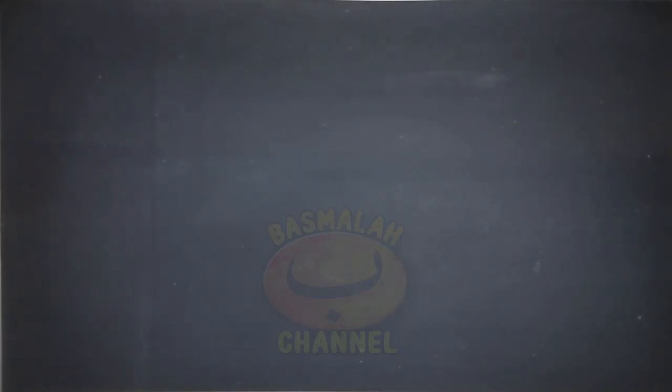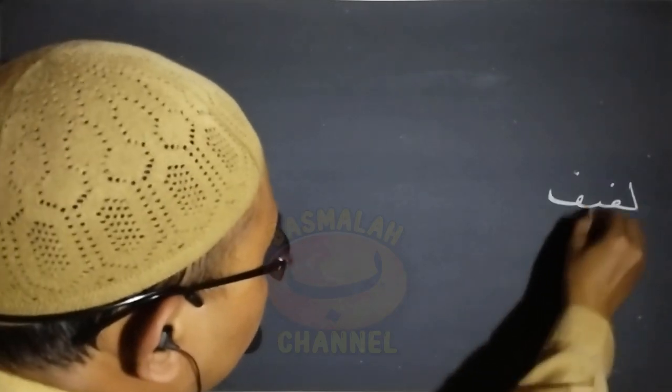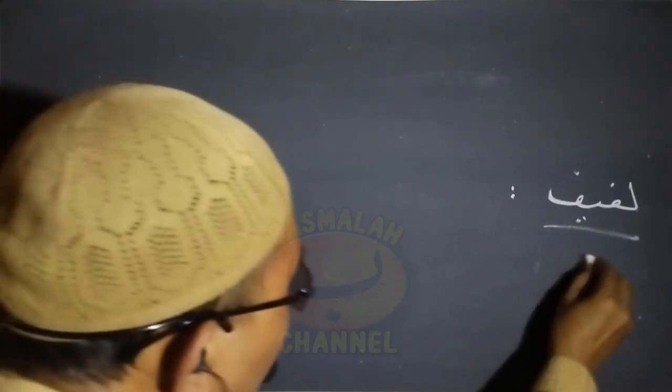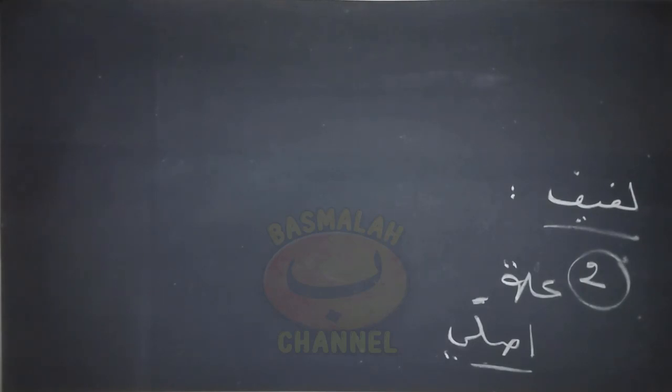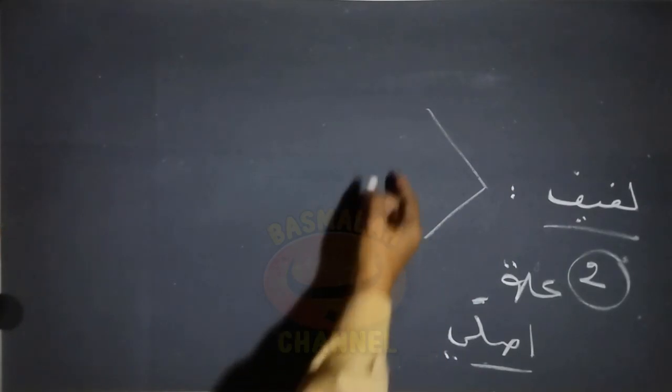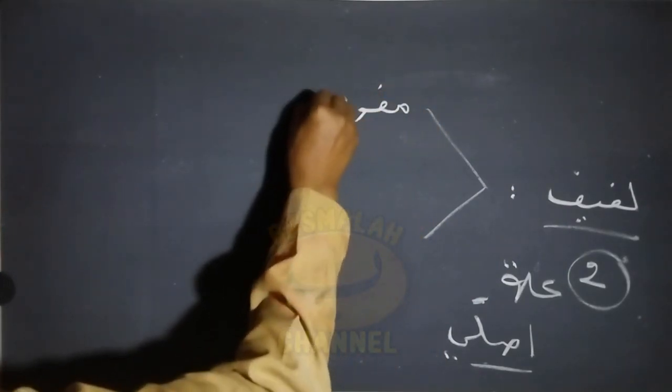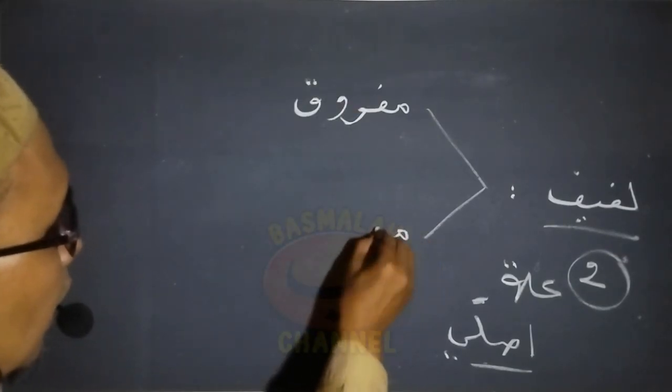Pembahasan kita adalah masih tentang keadaan dari fi'il mu'tal. Fi'il mu'tal yang kita bahas dalam pembahasan kali ini adalah tentang fi'il mu'tal yang masuk di dalam kategori bina' lafif. Bina' lafif adalah merupakan suatu bentuk dari kalimat yang mana di dalamnya terdapat dua huruf ilat, dan kedua huruf ilat di sini adalah merupakan huruf ilat yang asli, bukan huruf ilat yang merupakan huruf tambahan. Bina' lafif di sini terdapat dua: ada yang masuk di dalam kategori la'fif mafruk, dan ada yang masuk di dalam kategori la'fif maqrun.